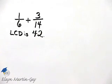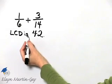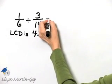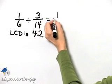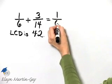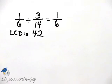That is one way of finding the least common denominator. I want to now rewrite each fraction as an equivalent fraction but with a denominator of 42.